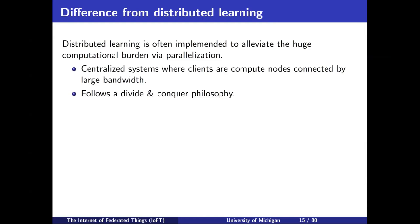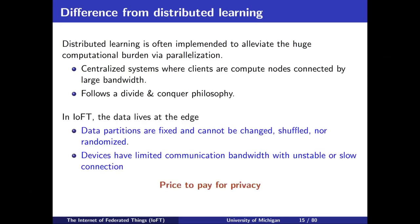Distributed learning is a centralized system where entities or clients are compute nodes like GPUs — it's based on the idea of divide and conquer. But in a federated system, there is nothing to divide and nothing to conquer. You cannot divide the data because it's at the edge — it's pre-partitioned; you cannot shuffle, randomize, or make the data IID. Second, there is nothing to conquer: when you have multiple entities, you do not want to learn a global model — you want to borrow strength so that each client has a better model. This is the fundamental difference between distributed learning in a centralized system and decentralized systems.